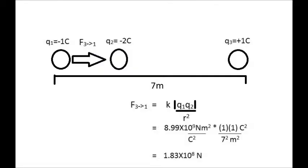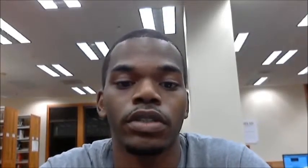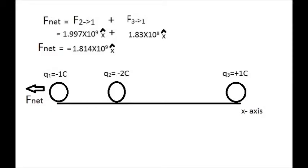Because charge one is negative and charge three is positive, the force on charge one due to charge three is to the right, which shows attraction. If the force is to the left, it's in the negative x direction. And if it's to the right, it's in the positive x direction. The net force on charge one is equal to the force on charge one due to charge two plus the force on charge one due to charge three.